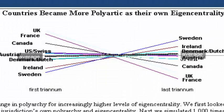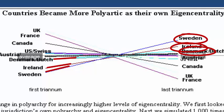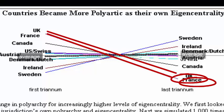Ireland, Denmark, and the Netherlands, polyarchy rose in response to these jurisdictions' own eigencentrality. Whereas in places like France and the UK, polyarchy continued to fall or increasingly fell as these jurisdictions became more central.